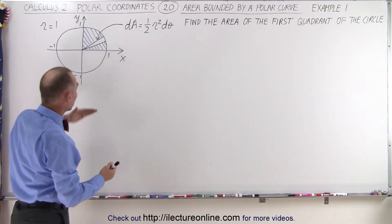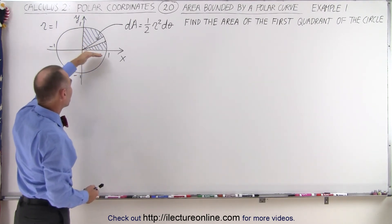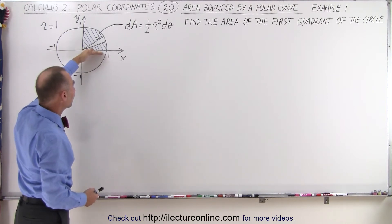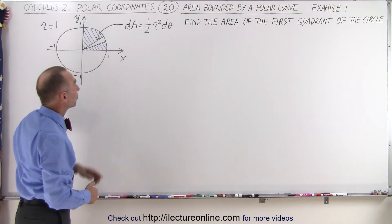Now to find the whole area, we need to integrate all these small area elements from the first angle to the last angle. In this case, the angle θ₁ will be 0, and θ₂ will be π/2, or 90 degrees.